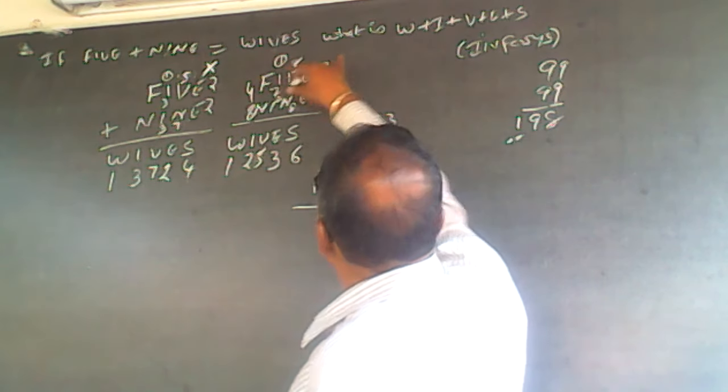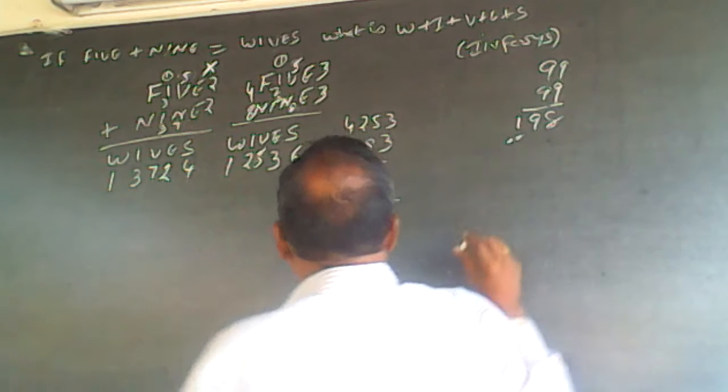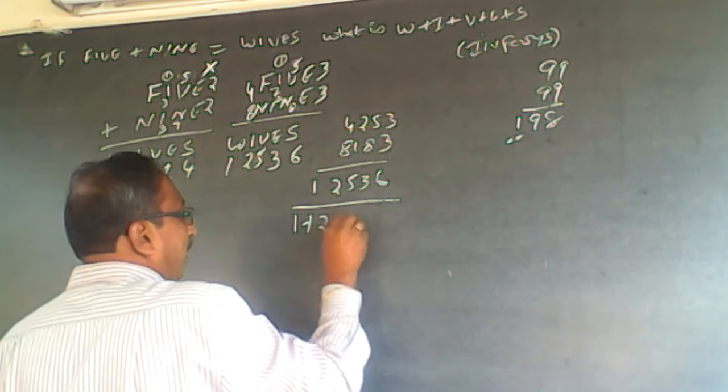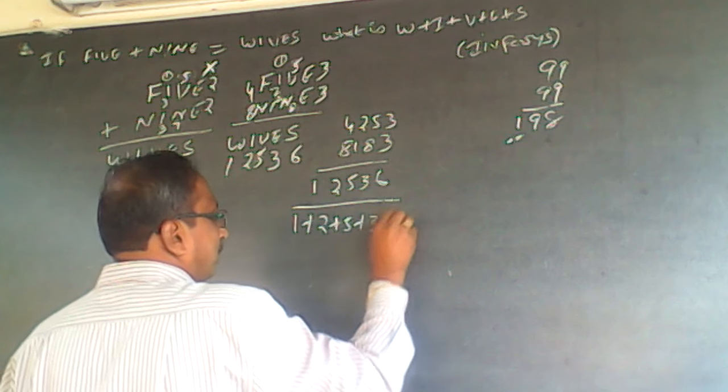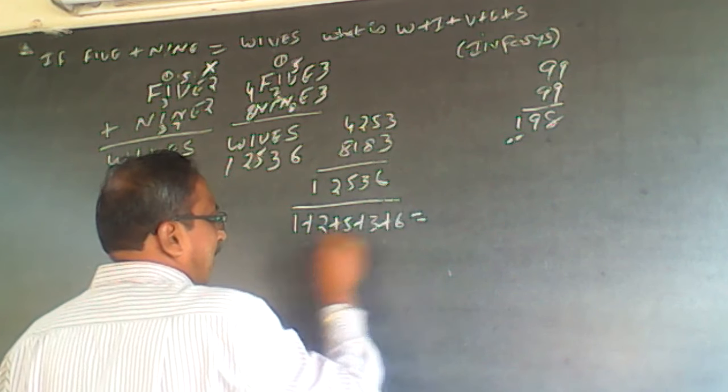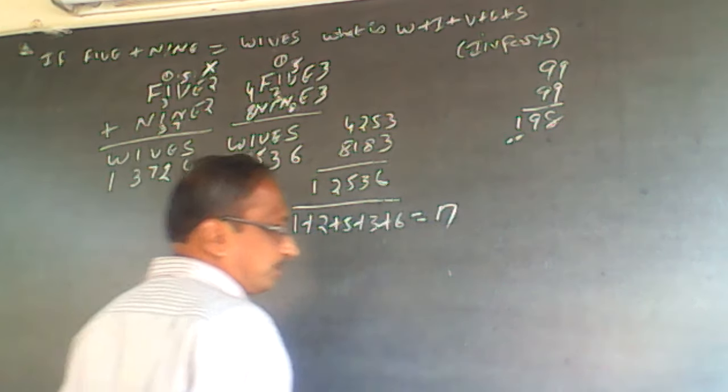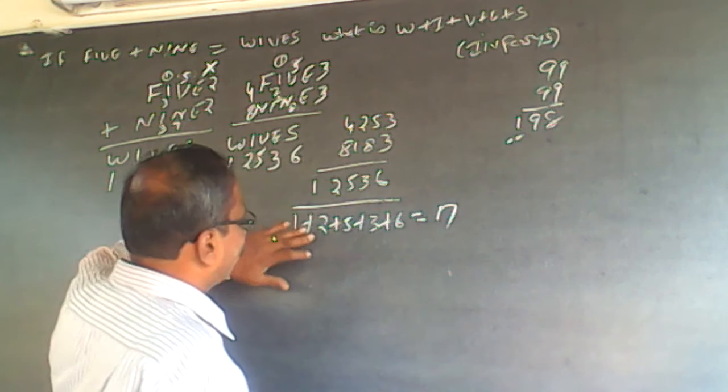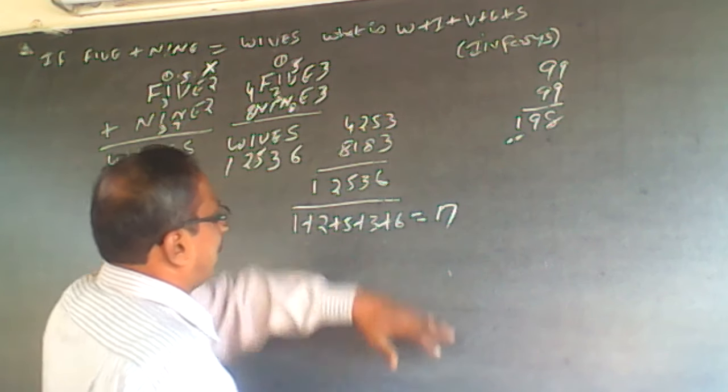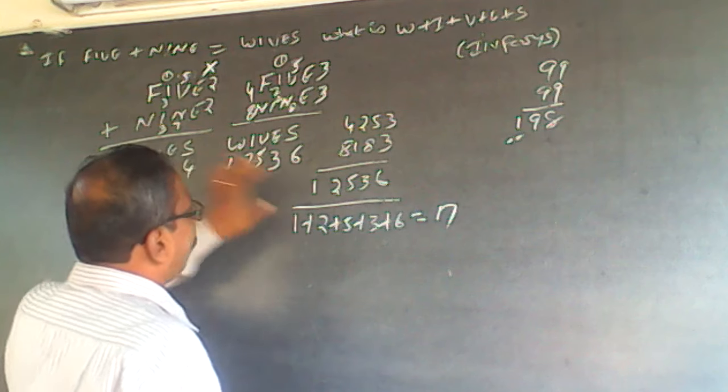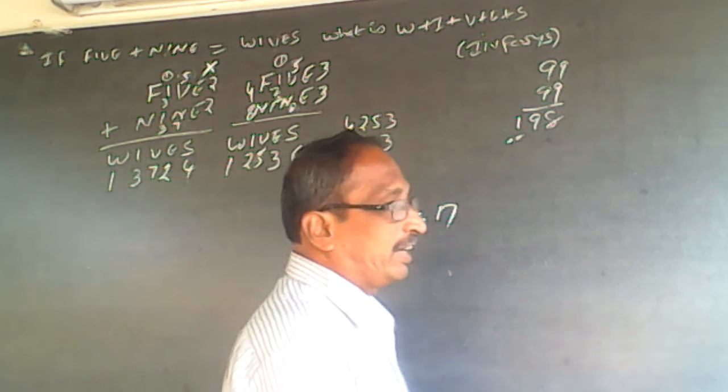So here what they have asked is W + I + V + E + S. So it will be 1 plus 2 plus 5 plus 3 plus 6. So this will be 9 plus 8 will be 17. 1 plus 2, 3 plus 5, 8. 8 plus 9 will be 17. It is 1, 2, 5, 3, 6. The answer is 17.